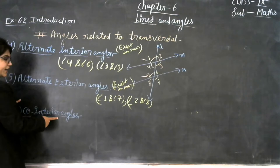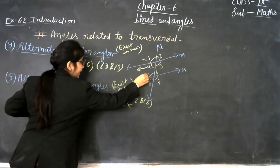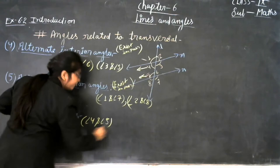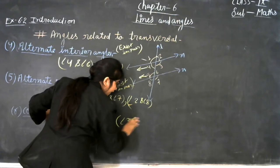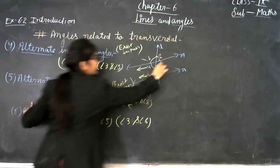The next type is co-interior angles, also called same-side interior angles. Angle 4 and angle 5 are one pair of co-interior angles, and angle 3 and angle 6 are the second pair.